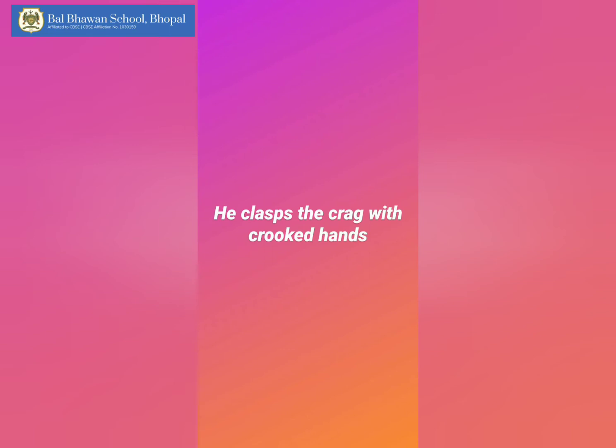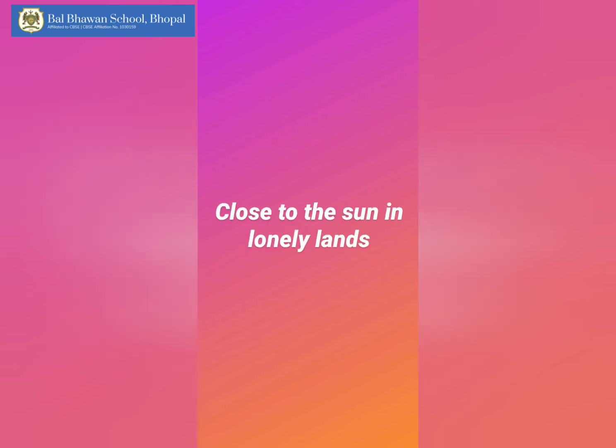Tennyson uses the poetic technique of personification in talking about the eagle's hands — when Tennyson makes the association of the eagle's claws with human hands. He lets us know that the story of the eagle is not just a study of an animal in its natural environment, but that symbolically he is telling us about human beings.